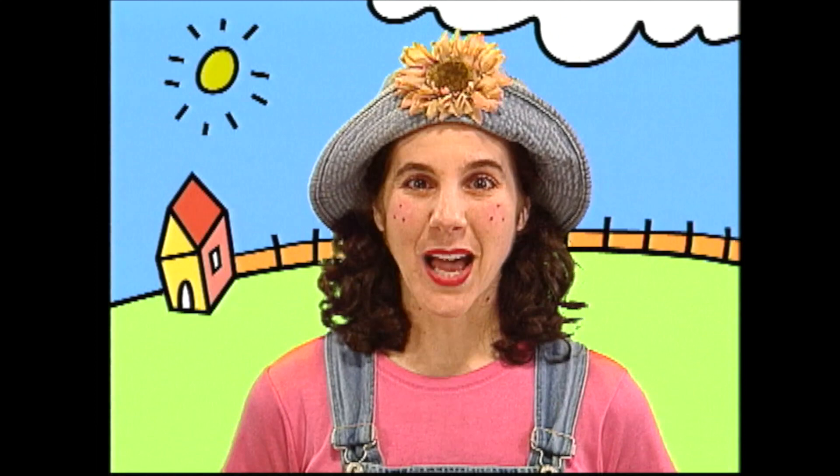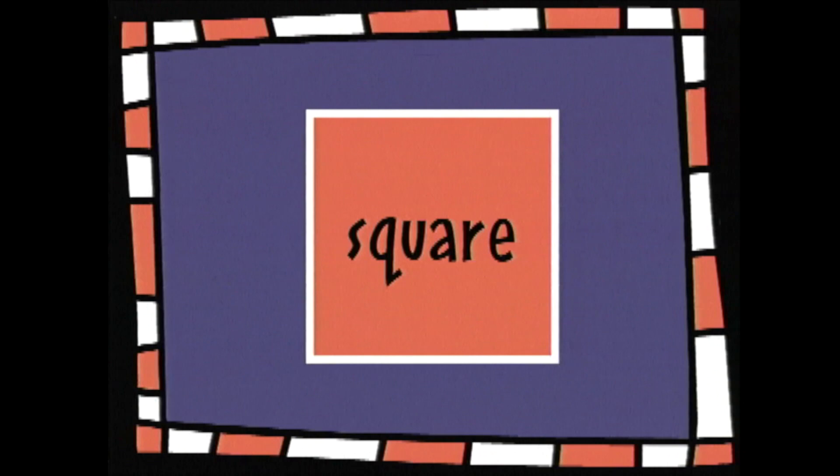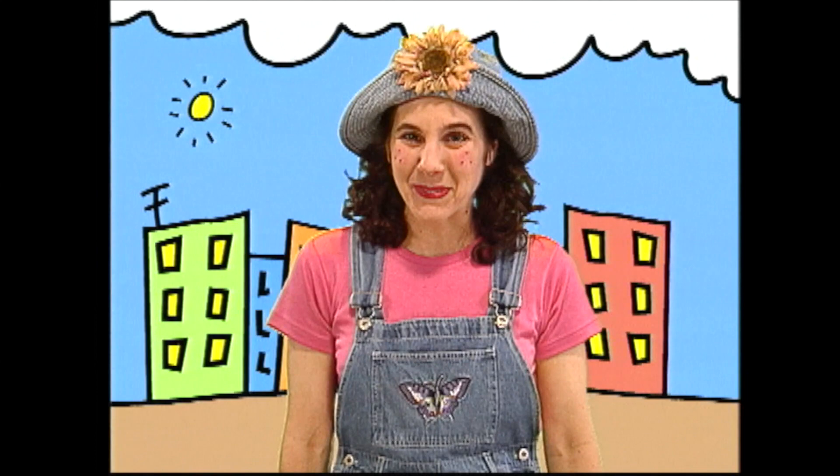Now that we've learned the names of the colors, I'd like to introduce you to shapes. This is a circle — as you see it, it's round. If you stretch it, it makes an oval. And this is a square — it measures the same on all four sides. Shapes, shapes, all over the place. Shapes are everywhere, taking up space. Shapes, shapes, go every which way. Shapes, shapes, all over the place.